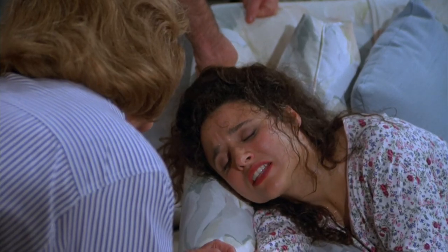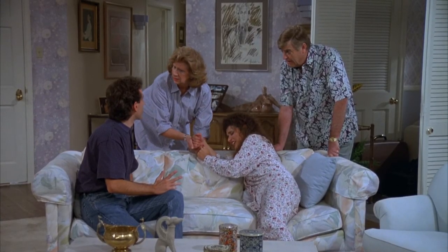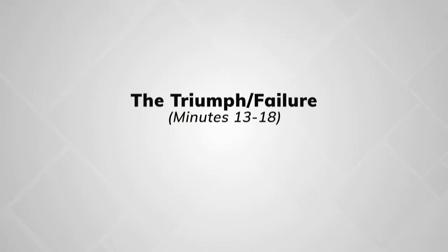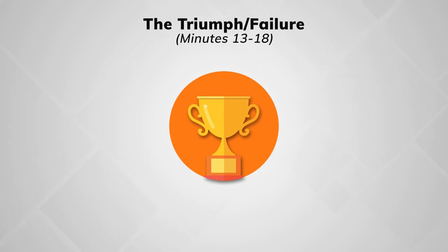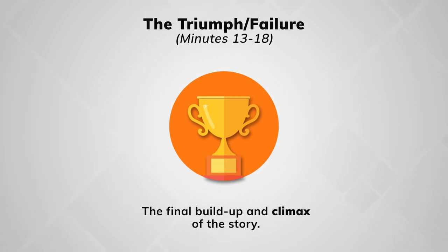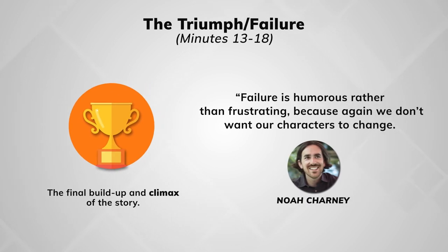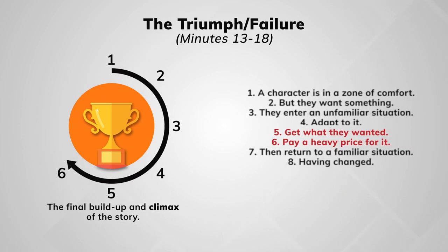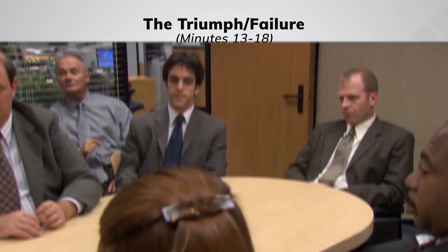At this point in the story, the main conflicts have heightened, and now we move into the stage with a strong turning point. For minutes 13 to 18, Charney says we move into the triumph-slash-failure. Here is where we find the final build-up and climax of the story. Charney writes that failure is humorous rather than frustrating, because we don't want our characters to change. In the story circle, this is points 5 and 6 — the characters get what they want, however it comes at a cost, and things don't go as planned.